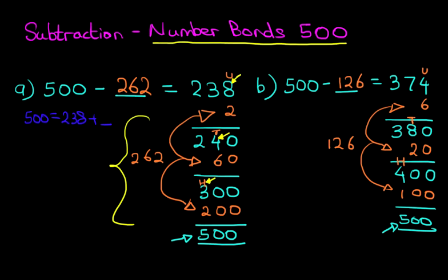Now, have a practice. In no time, you'll be able to do this in your head. It's not as difficult as it looks; it just requires practice. That is subtraction of number bonds to 500.